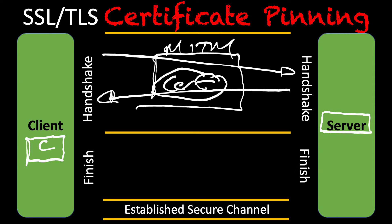We can actually do that in two ways. I mentioned the actual certificate, but we can also pin the public key of that cert. So the client app can use the public key or the cert that's pinned and match it when we get that response back from the server. Pinning the actual certificate is easier, while pinning the public key is much more flexible — that's the main difference between the two.